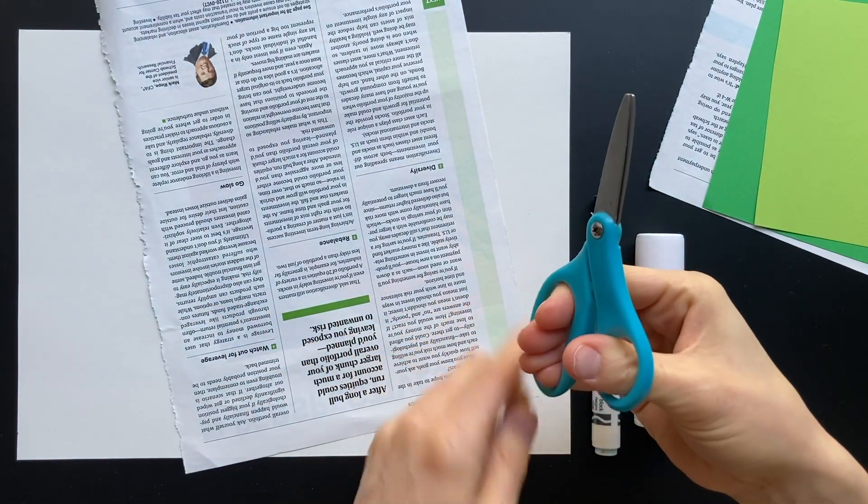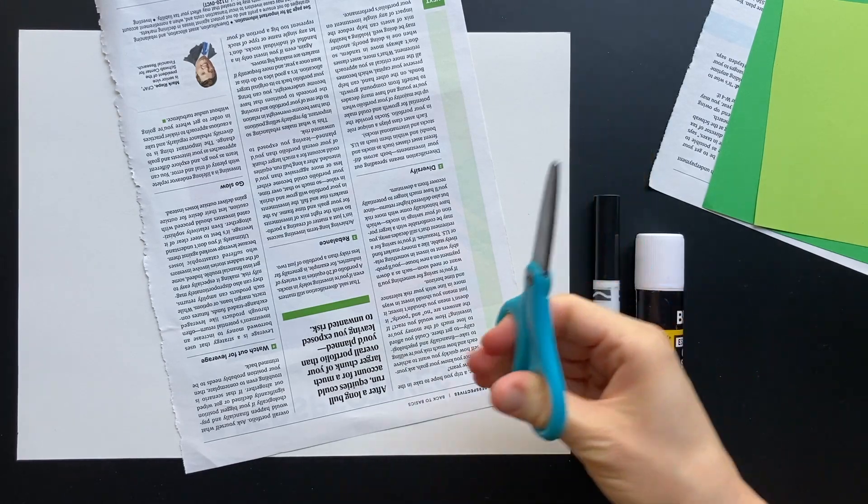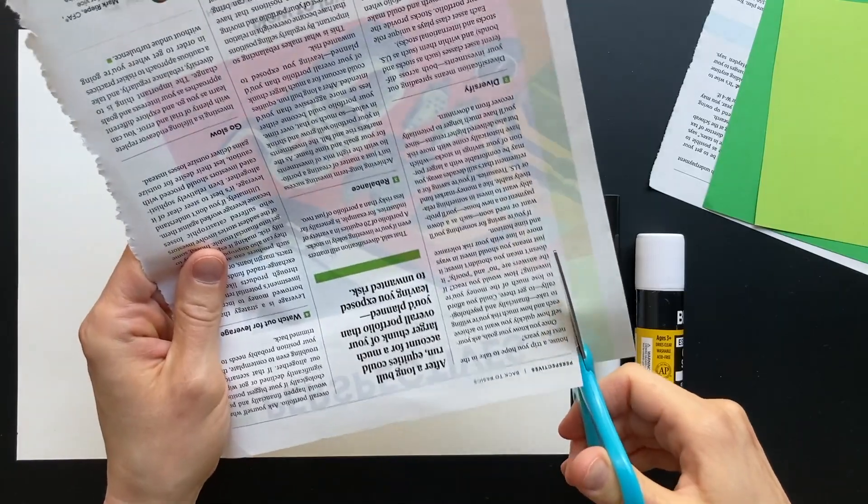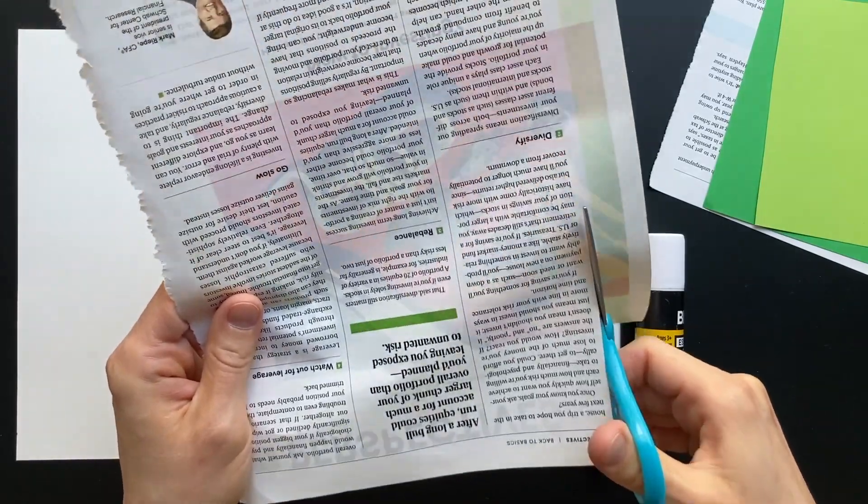Be sure to put your thumb in the smaller hole of the handle of your scissors and the rest of your fingers in the larger hole. Keep your thumb on top and turn the paper as you cut to change directions.